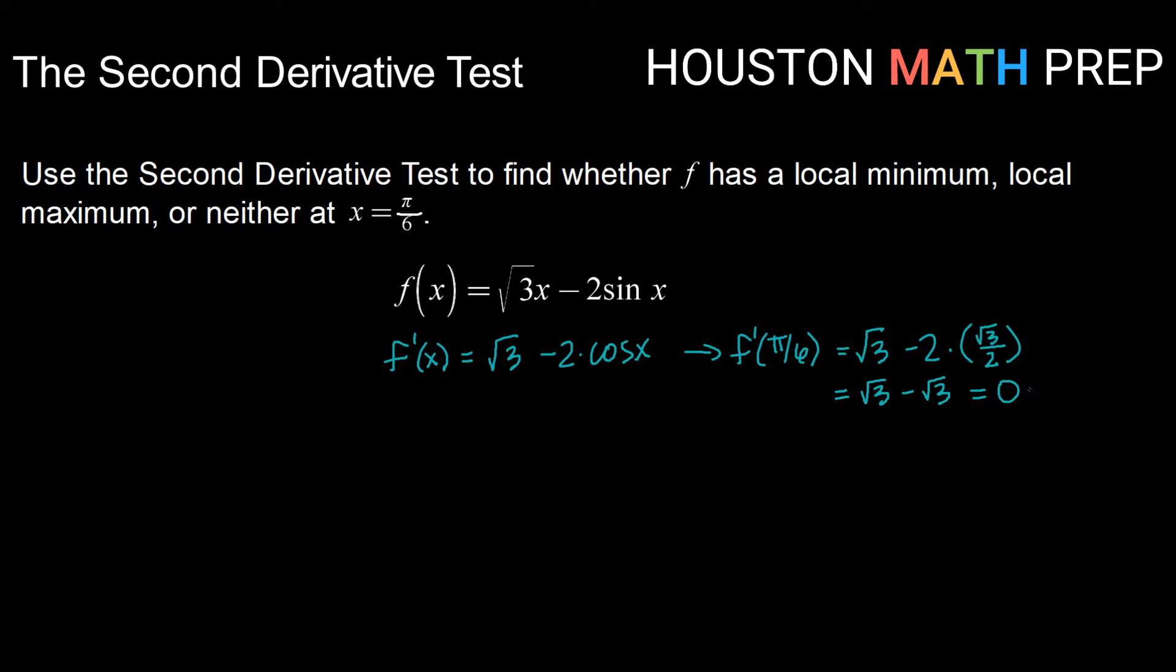So because the first derivative evaluated at pi over 6 is zero, we have a candidate at pi over 6 for a local minimum or a local maximum. So now we need to find the second derivative and see if it evaluates as positive or negative at that point.